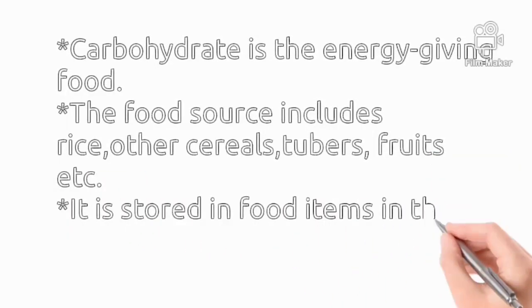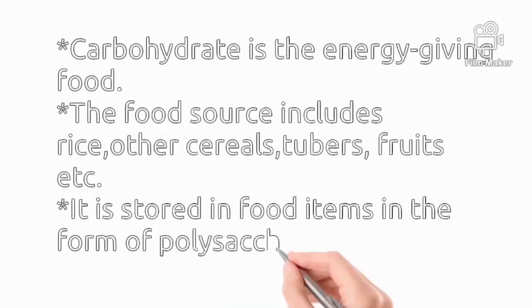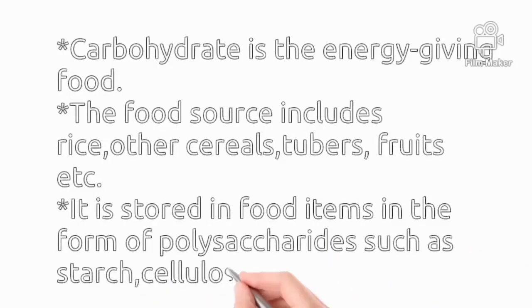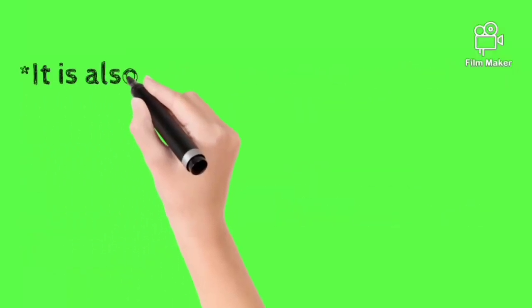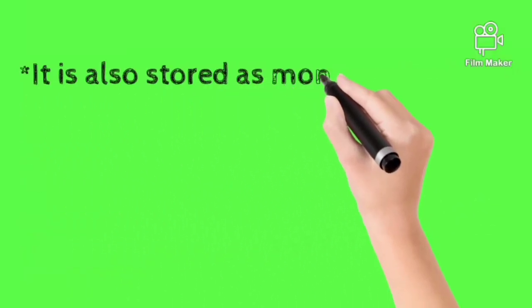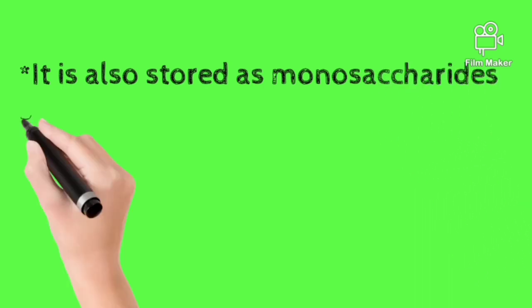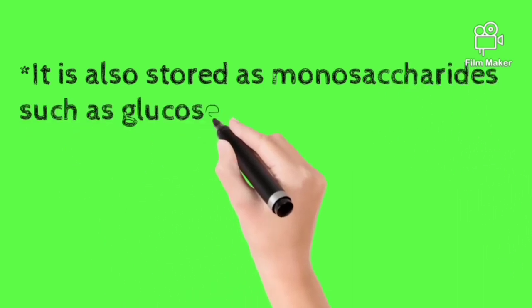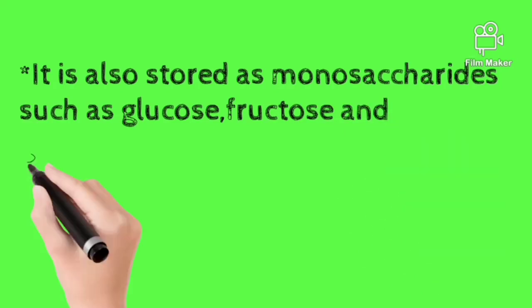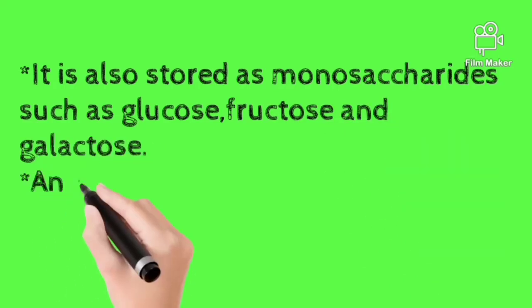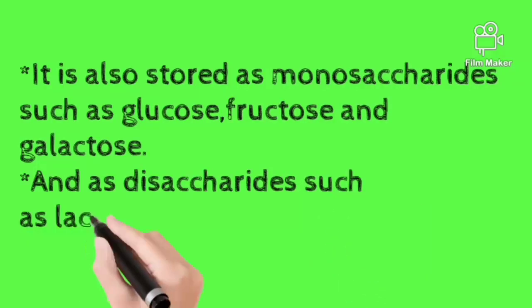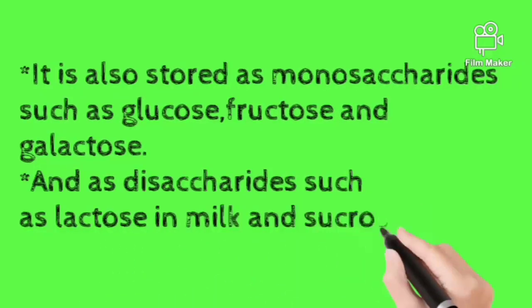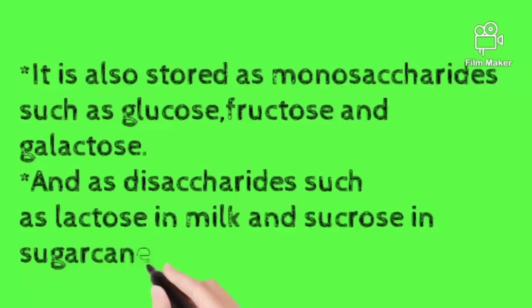It is stored in food items in the form of polysaccharides such as starch, cellulose, and glycogen. It is also stored as monosaccharides such as glucose, fructose and galactose, and as disaccharides such as lactose in milk and sucrose in sugarcane.